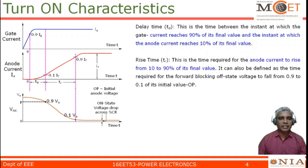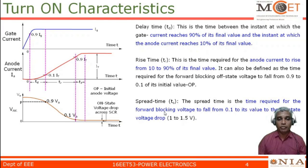Spread time is the time taken by the anode voltage to drop from 10 percent of its initial value down to the minimum on-state voltage drop across the device, which is approximately 1 to 1.5 volts. So spread time is the time required for the forward blocking voltage to fall from 10 percent of its value to the on-state voltage drop.